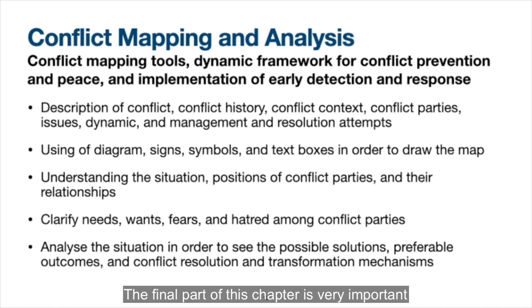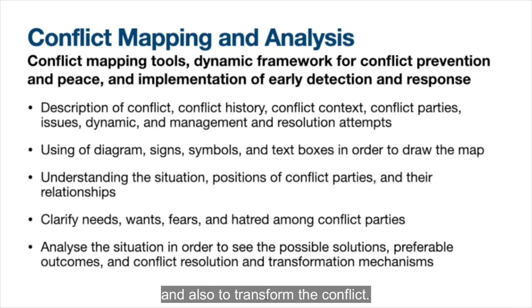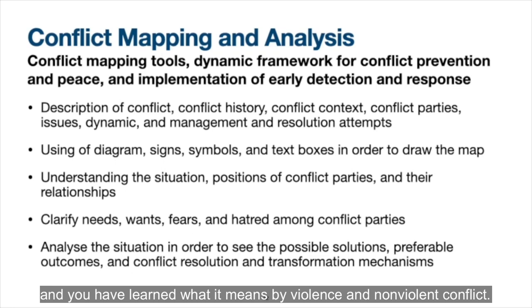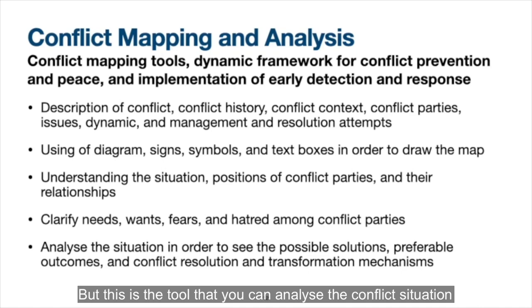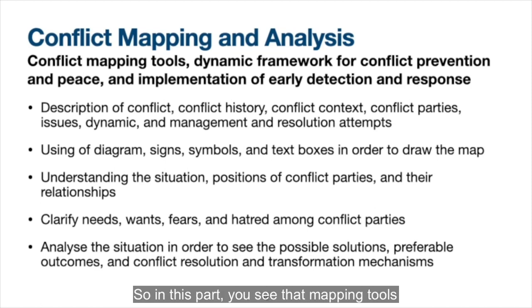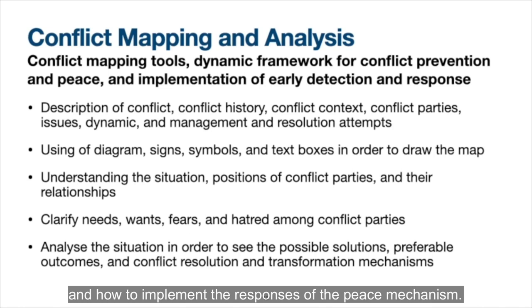The final part of this chapter is very important because it covers tools you might use to analyze and transform conflict. You have already learned the principles of conflict theories, the theory of violence, and what it means by violence and non-violence conflict. You have seen how society can transform into protracted social conflict. Now comes the tools — Conflict Mapping and Analysis — which you can use to analyze the conflict situation, and also to identify tools that could be used when facing conflict, including how to prevent violent conflict, pursue peace, and implement peace mechanism responses.